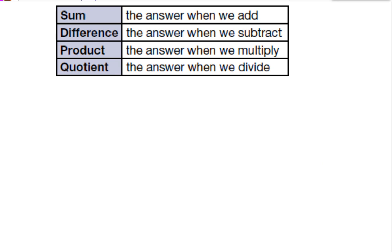When we have multi-step problems, we need to know the operations of arithmetic: addition, subtraction, multiplication, and division, and the terms we use for the answers. The sum is the answer when we add. Difference is the answer when we subtract. Product is the answer when we multiply. And quotient is the answer when we divide.